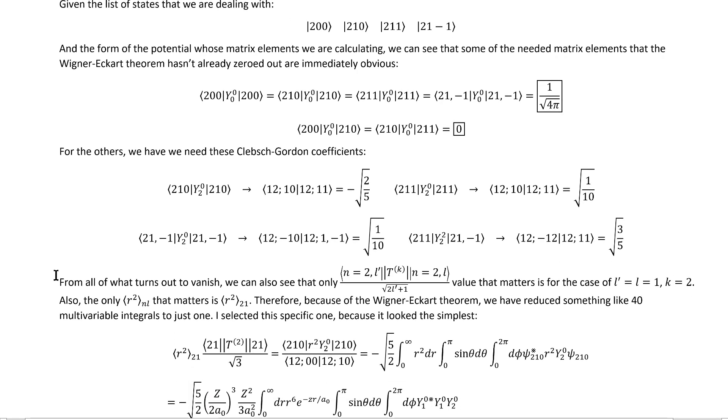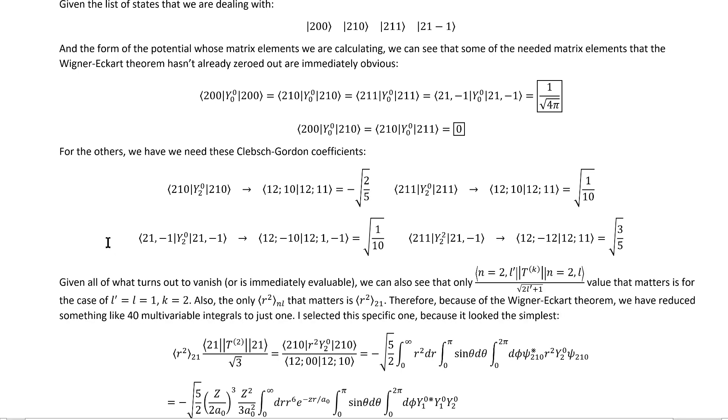However, there still is a simplification to be found by further applying the Wigner-Eckart theorem. Given all of what turns out to vanish given the Clebsch-Gordon coefficients or is immediately evaluatable, it turns out that the only one of these universal factors that actually matters is for the case of L' equals L equals 1 and K equals 2. There are other cases that would in general show up in this problem, but we've already handled every matrix element associated with those. So all we have left to deal with is this one. We can also see that we only have one R-squared expectation value because every single one of these remaining states has N equal to 2 and L equal to 1.